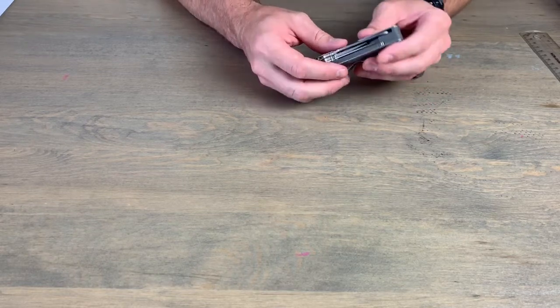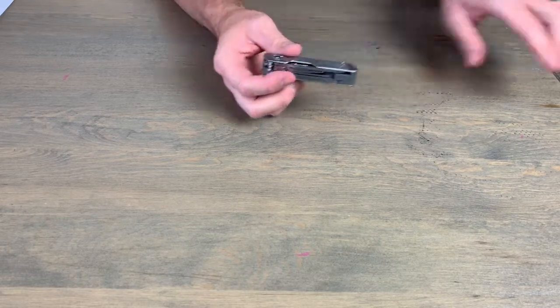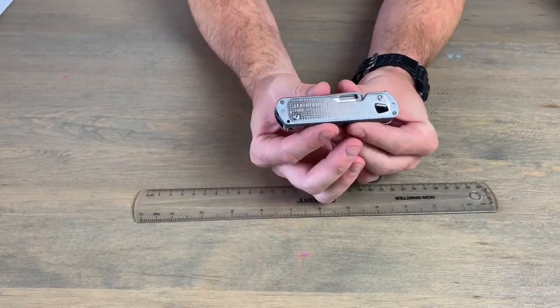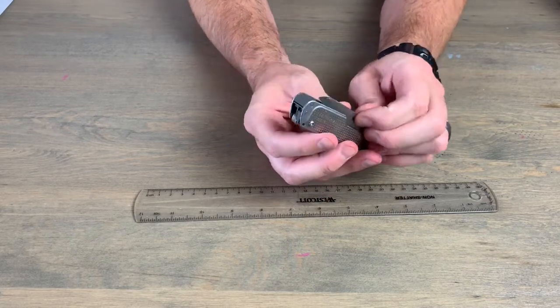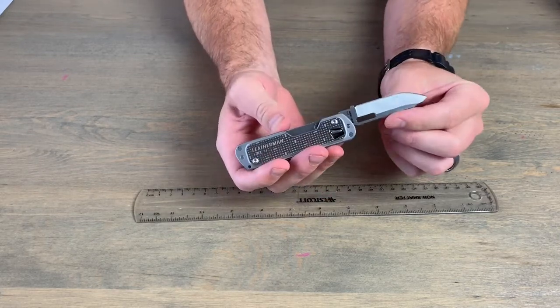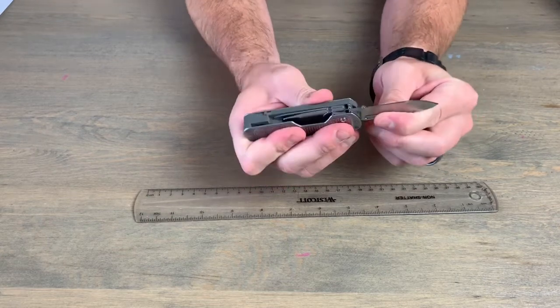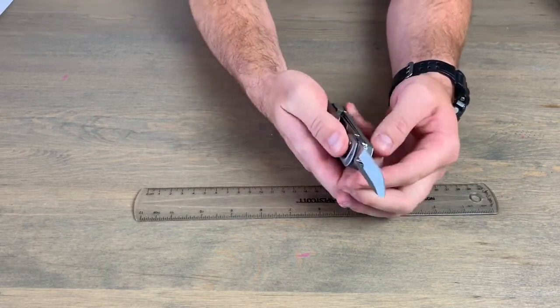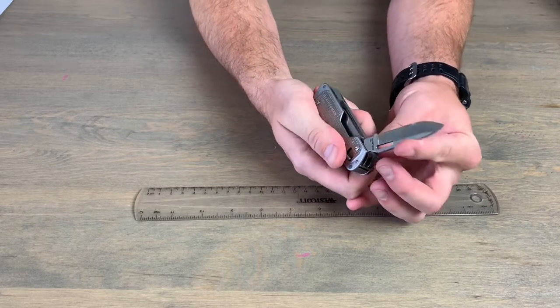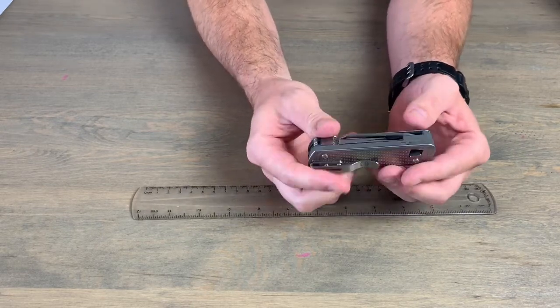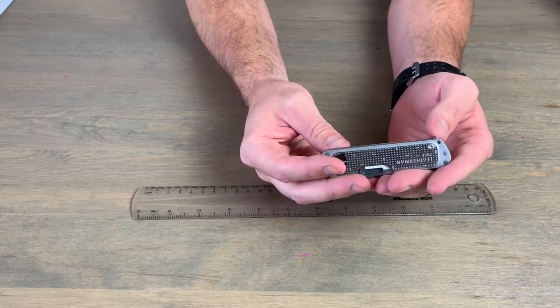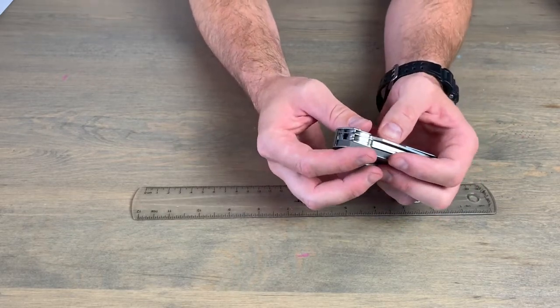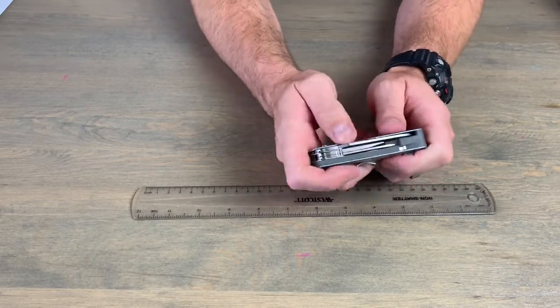Just a general overview of the multi-tool. It is made in the USA, has 12 tools. The main blade is 420HC, it is locking, which I like. It's not a slip joint like a lot of Swiss Army knives. This is really fulfilling a function in replace of Swiss Army knives, I think, for a lot of people because it has a lot of tools like the Swiss Army but they're locking, which is great.